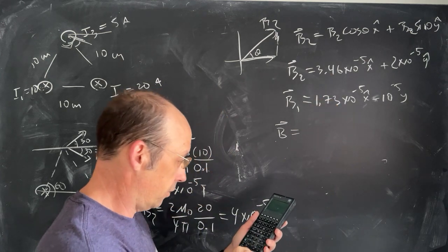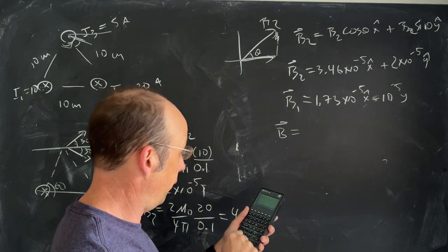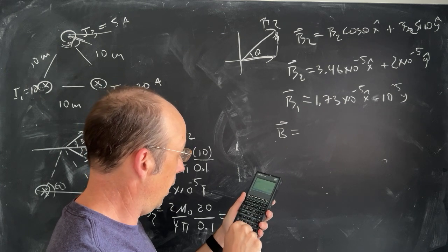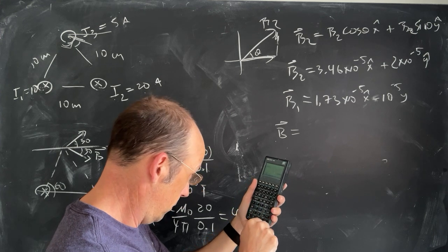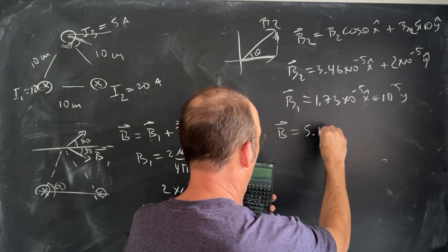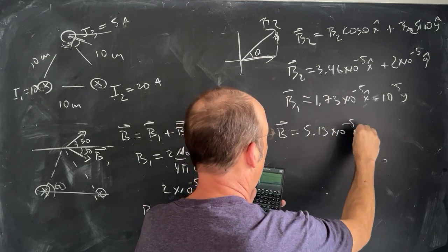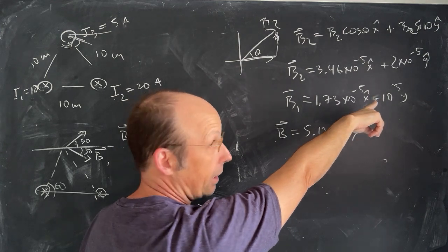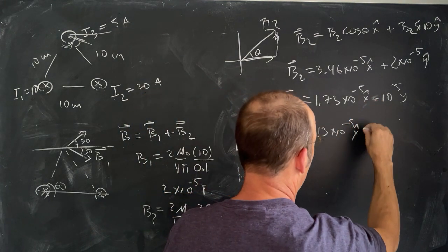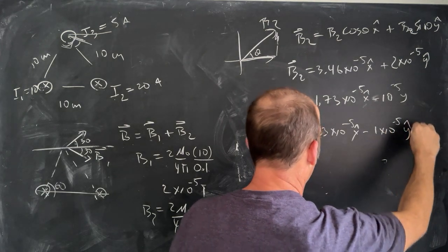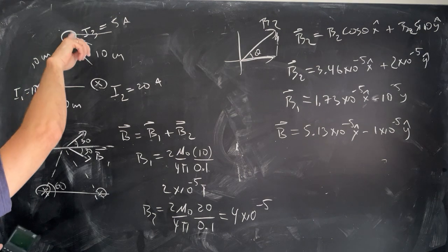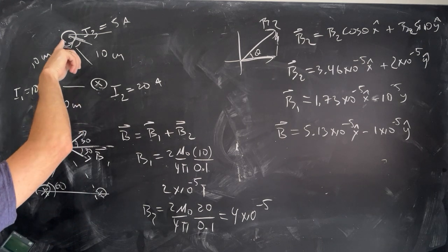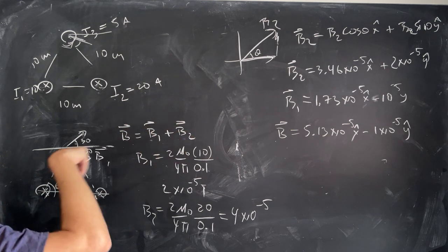Now I have B1 and B2 in component form so I can add them. B_total: adding the x-components gives 3.46 plus 1.73 times 10 to the negative 5, which is 5.13 times 10 to the negative 5 x-hat. The y-components: positive 2 times 10 to the negative 5 minus 1 times 10 to the negative 5 gives 1 times 10 to the negative 5 y-hat. So B_total points mostly in the x-direction, slightly downward.